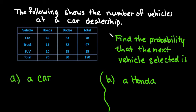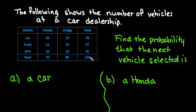For this video, we're going to find a probability given a contingency or two-way table. Different textbooks call them different things. Basically, a contingency table or two-way table has your relative frequencies in the middle and your marginal frequencies on the edges. For this video, I'm not going to do any givens — I'm just going to keep it to the very basics.